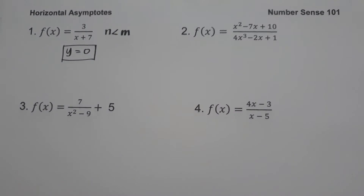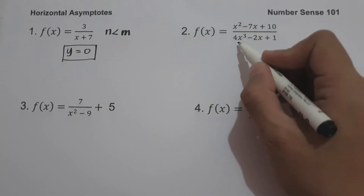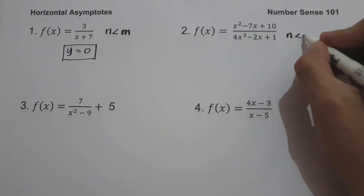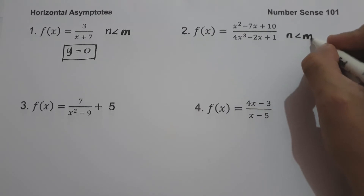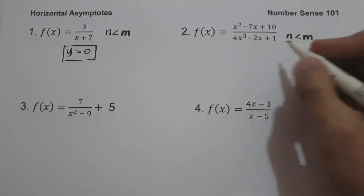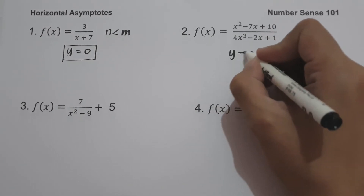On number two, we have f(x) equals x squared minus 7x plus 10, all over 4x cubed minus 2x plus 1. The highest degree in the numerator is two and the highest degree in the denominator is three. Therefore, we have n less than m, and our horizontal asymptote is y equals zero.